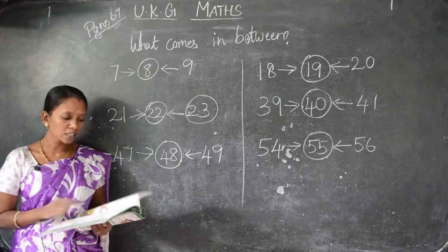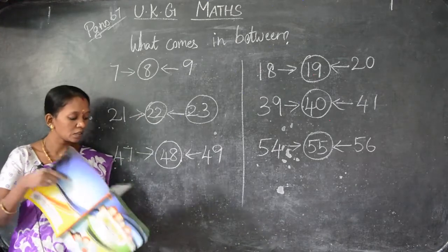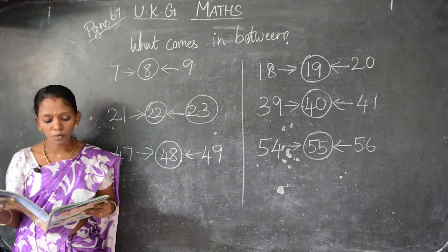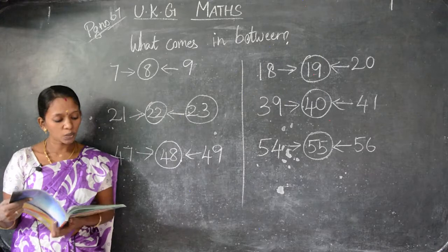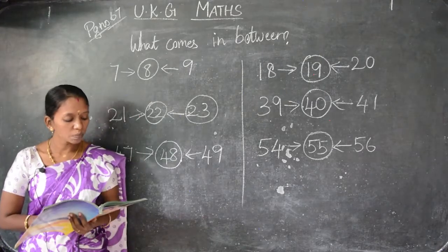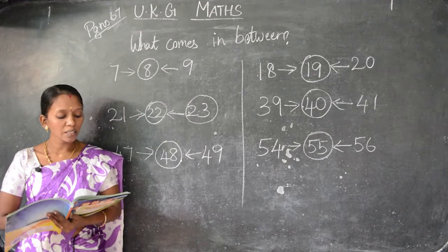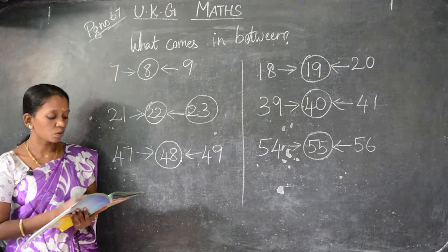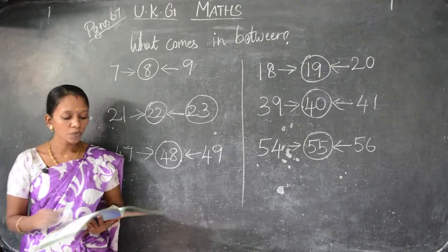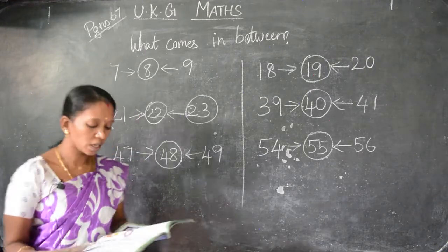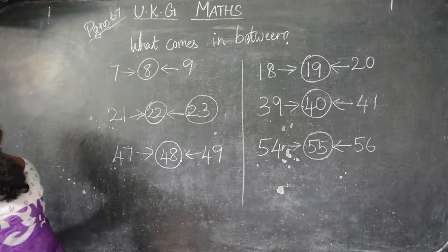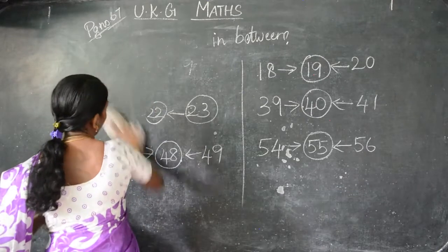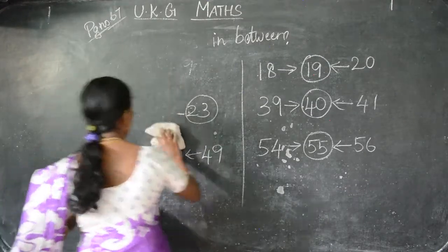Next we are going to see the next activity — fill in the circles with the numbers that come just before. The first one is done for you. You have to find the before number and fill in the circles. Now we are going to do that one. Take page number 68.